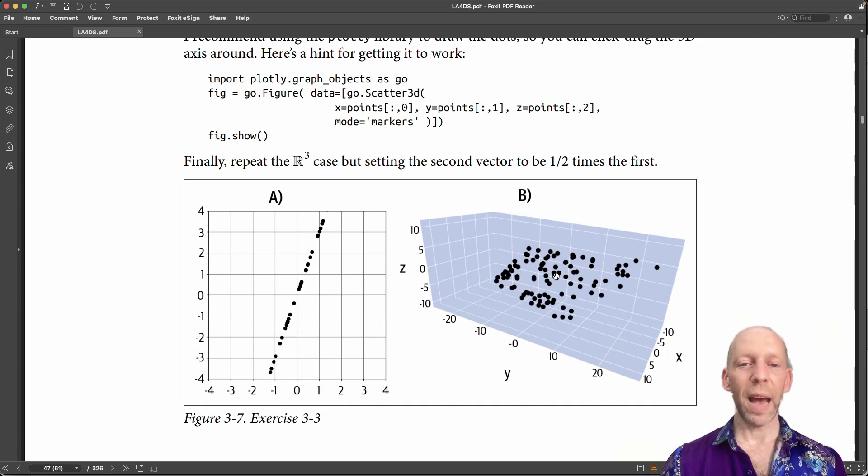And you will see that two vectors in a three dimensional space defines a plane. So all these randomly chosen points actually fall exactly on a plane, which is a two dimensional subspace of this ambient three dimensional environment.